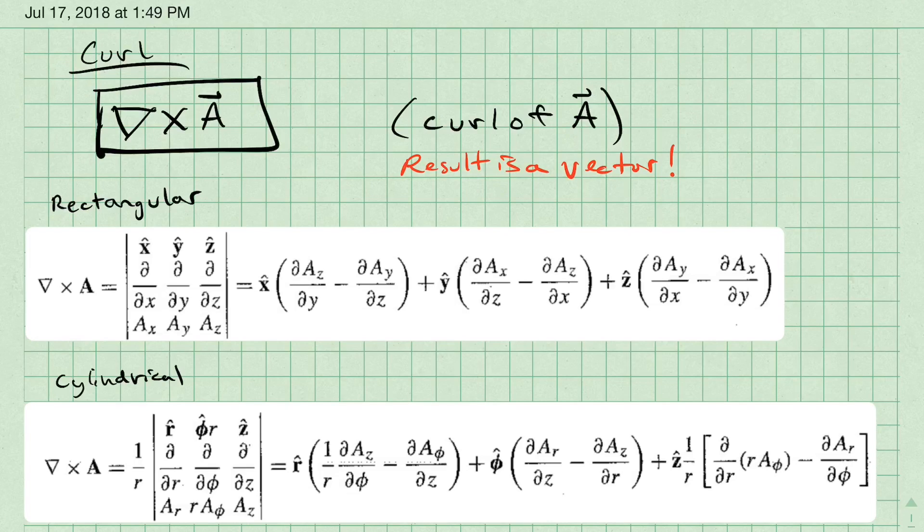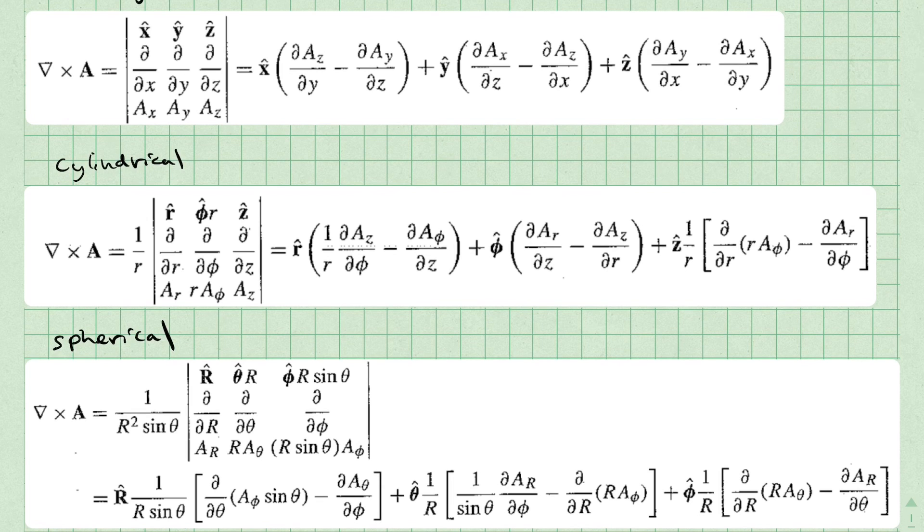It turns out that calculating the curl is essentially the same steps as calculating the divergence, we just use a different set of equations. The specific equation, again, depends entirely on the coordinate system we work with.